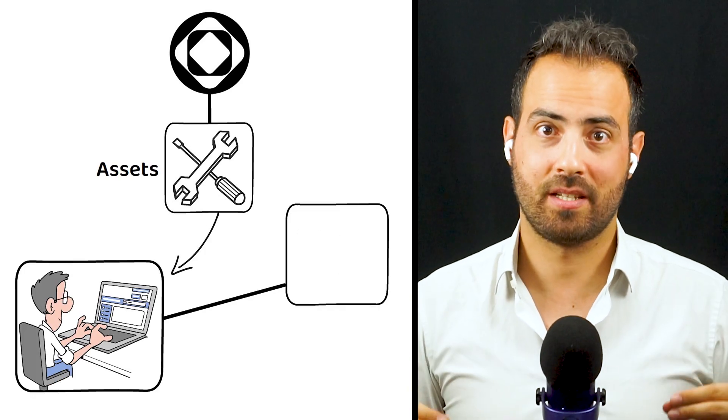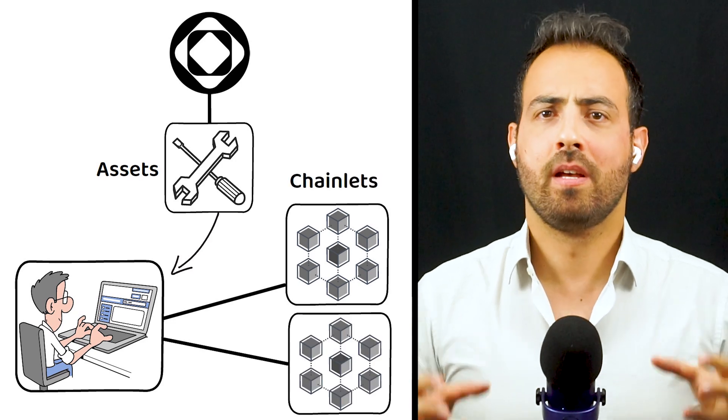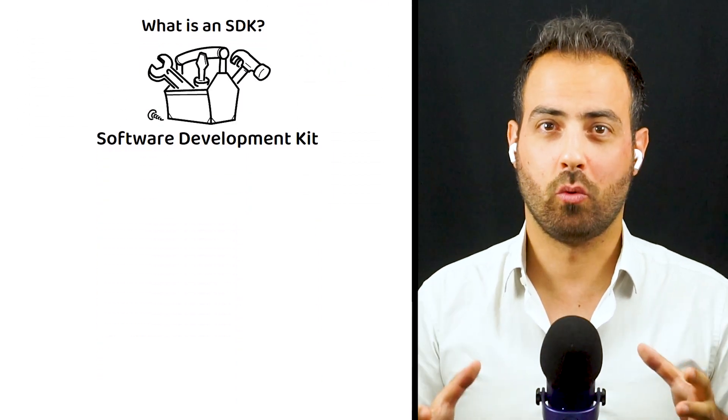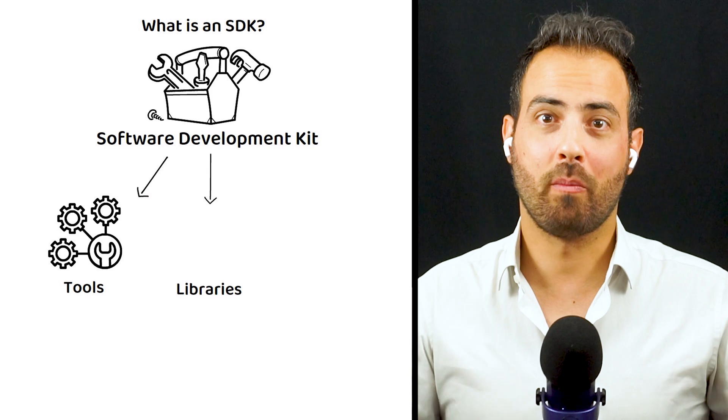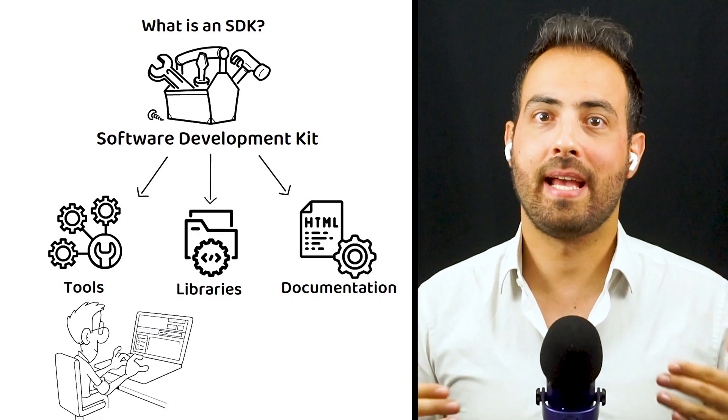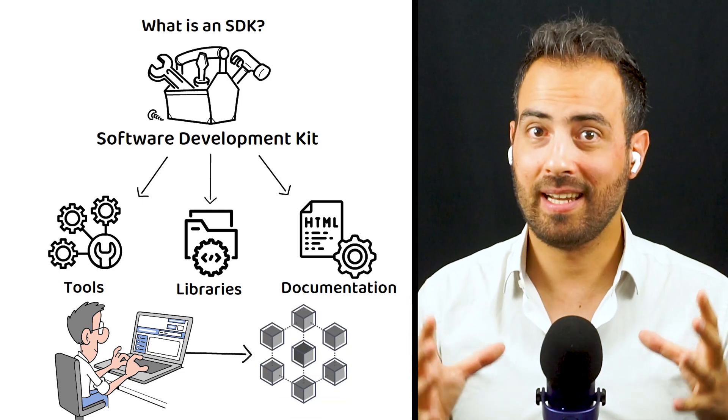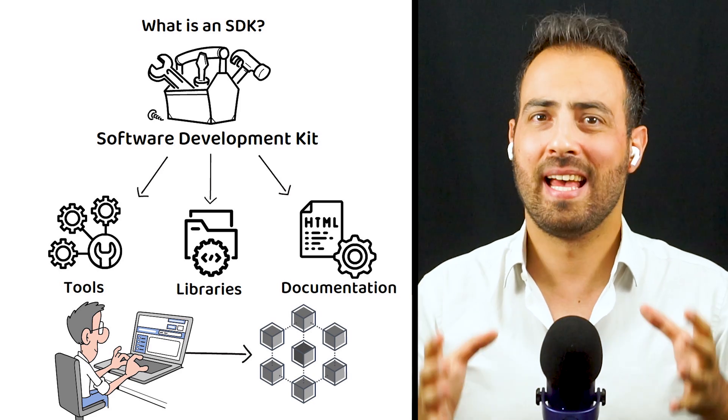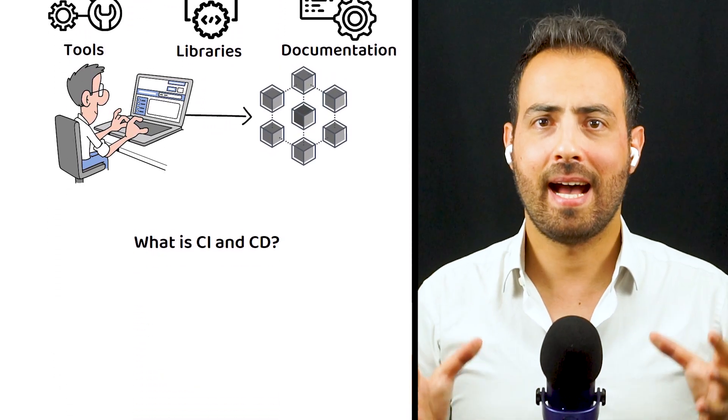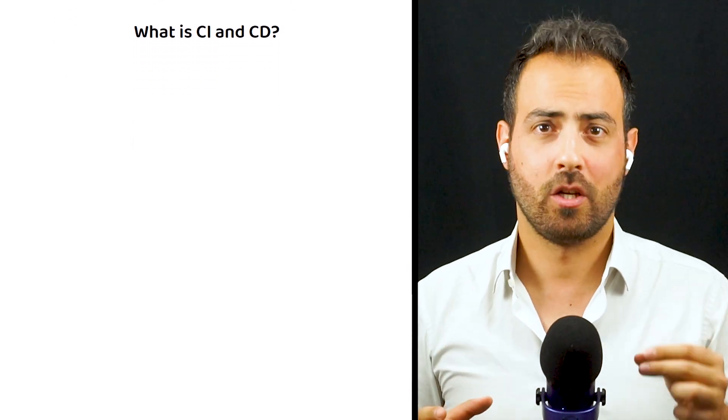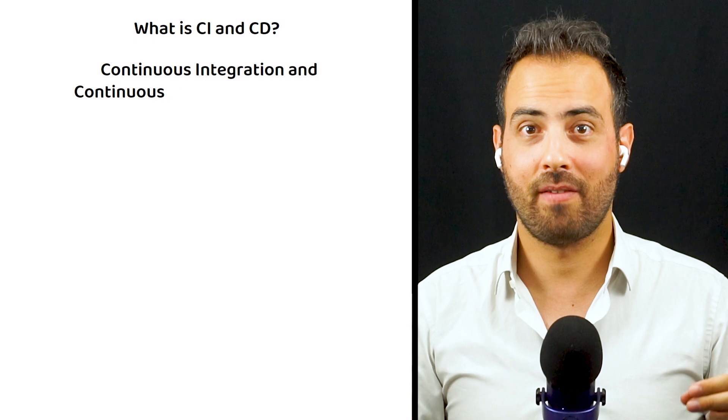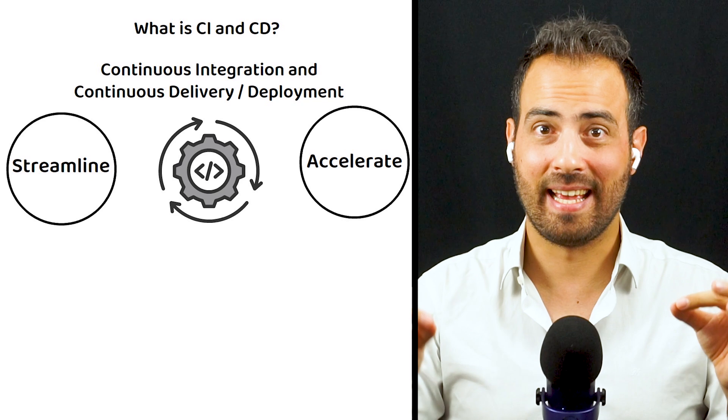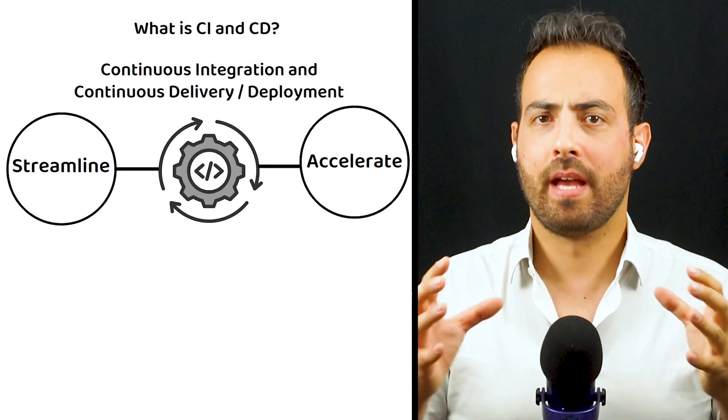Next, an SDK refers to a software development kit, which is a collection of tools, libraries, and documentation that developers use to create blockchains and their applications, ultimately streamlining the development process by providing necessary resources and simplifying integration. CI and CD, on the other hand, refers to continuous integration and continuous delivery or continuous deployment, and aims to streamline and accelerate the software development life cycle.